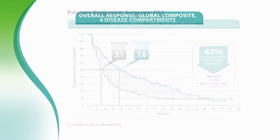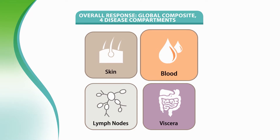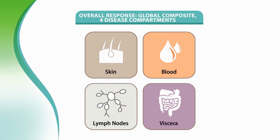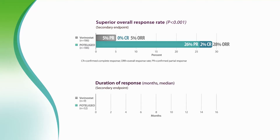The secondary endpoint was overall response, measured as a global composite response score of four disease compartments—skin, blood, lymph nodes, and viscera. Response had to be demonstrated at two successive disease assessments at least eight weeks apart during the first year and 16 weeks apart thereafter. More than five times as many patients treated with mogamolizumab responded compared with vorinostat—28% versus 5%. This response was more durable, lasting 54% longer than vorinostat: 13.9 months versus 9 months.